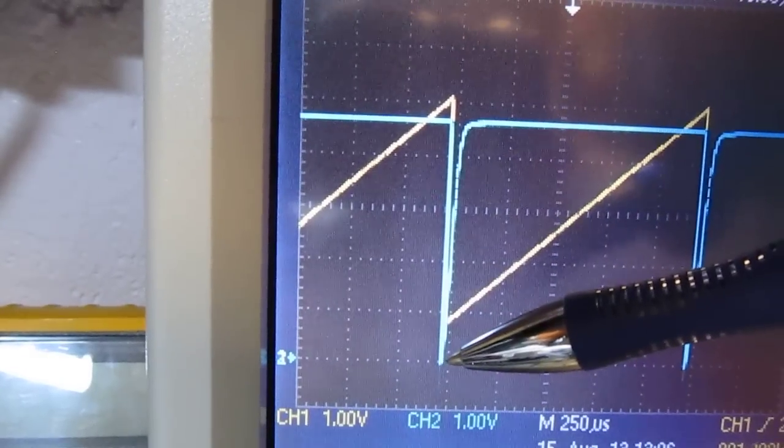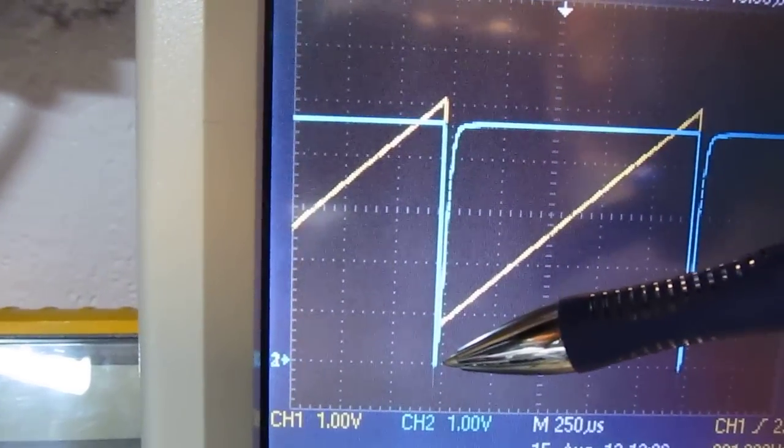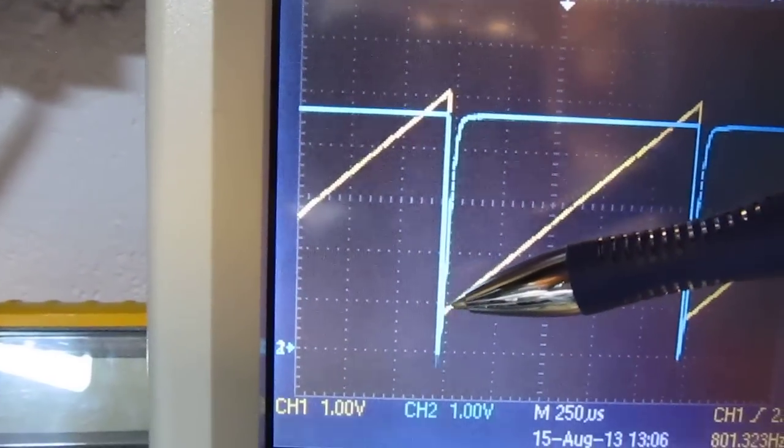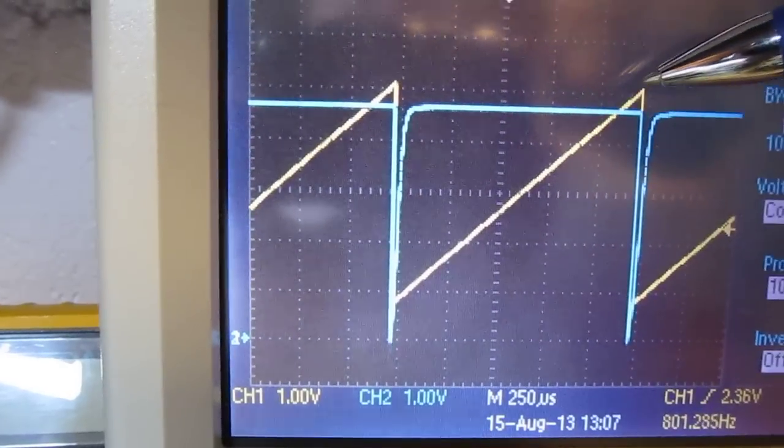That starts that regenerative action that turns on the PNP and NPN transistors. Bang! It yanks that voltage down, discharges the cap, winds up shutting itself off because it runs out of current, and then the capacitor charges up again, starts all over again.